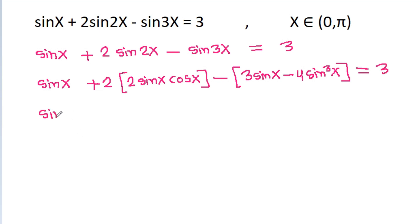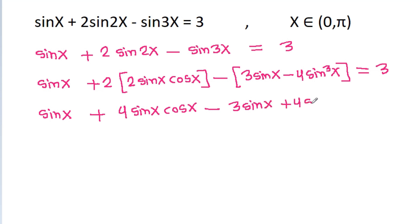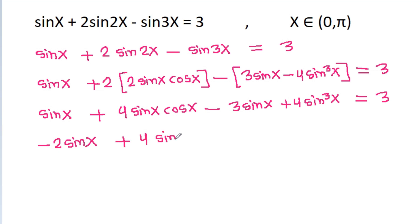And it is sin x plus 2 times 2, which is 4 sin x cos x, minus 3 sin x plus 4 sin cube x is equal to 3. And sin x minus 3 sin x will be minus 2 sin x, plus 4 sin x cos x plus 4 sin cube x is equal to 3.